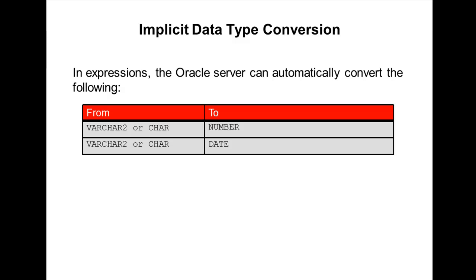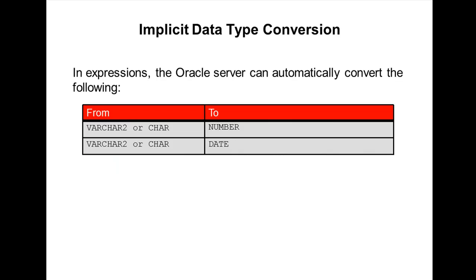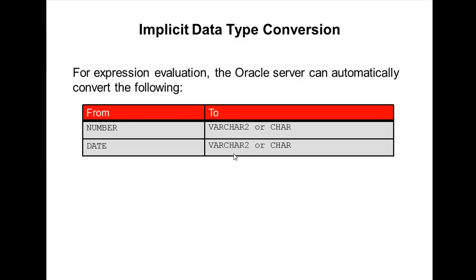In an implicit data type conversion, Oracle automatically converts a value of one data type to another data type. In expressions, Oracle server can automatically convert the following: VARCHAR2 data type value is converted into number data type value automatically, and VARCHAR2 can be converted to date data type. From number data type it can also convert to VARCHAR2 character, or from date data type to VARCHAR2 data type.